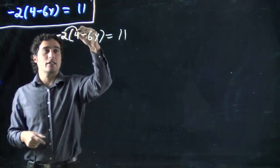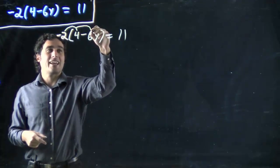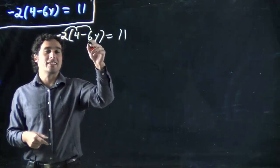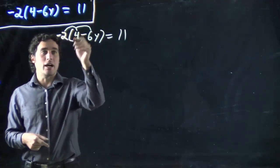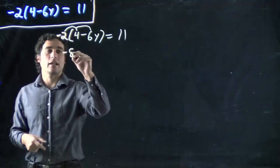And that means I've got to multiply by everything in the bracket, this term and this term. I don't multiply the 6 and the y because they're all one term. I have to multiply each term. So minus 2 times 4 gives me minus 8.